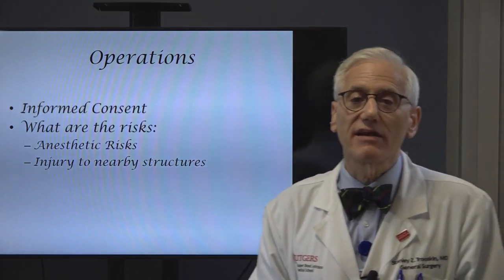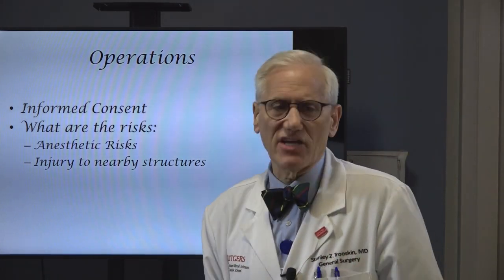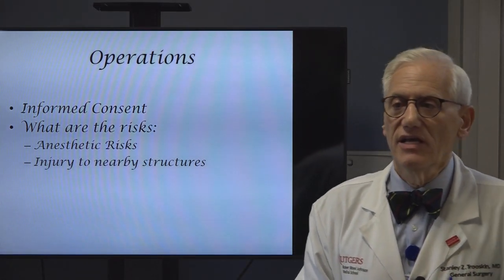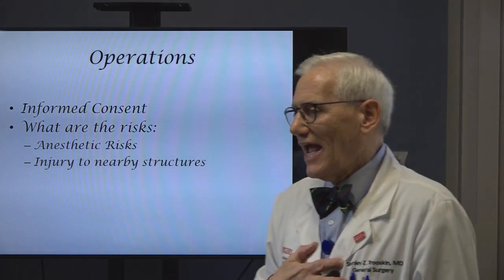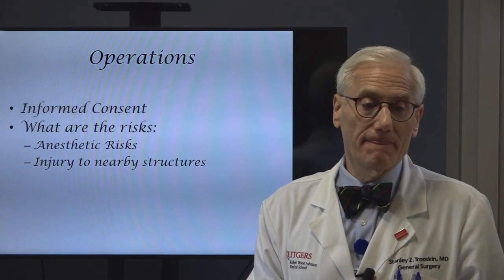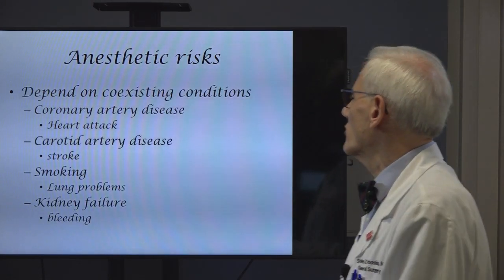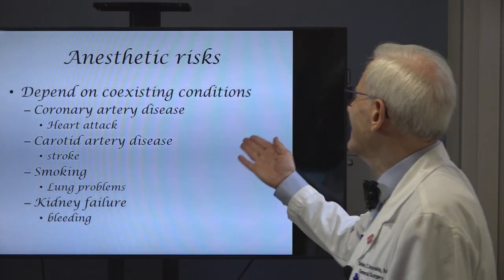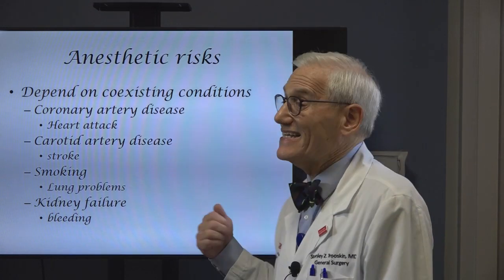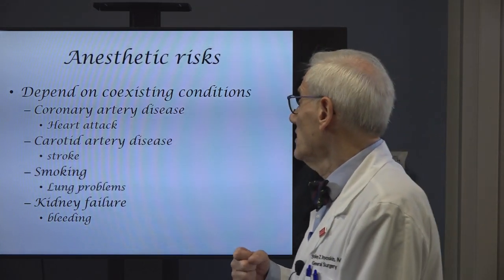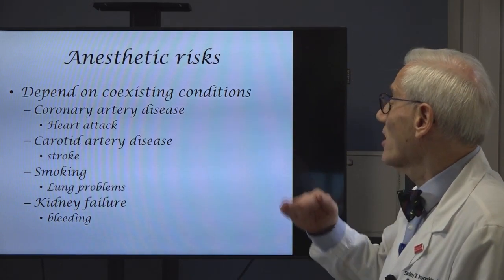We're going to talk about operations and informed consent. Informed consent is a discussion with the patient of what are the risks of the operation. There are two categories of risks. One is anesthetic risks — what's my health like and how am I going to do with the anesthetic? The other risks are what structures are nearby that have a potential to be injured. Anesthetic risks include coexisting conditions: if I have blockages in my coronary arteries, a heart attack is waiting to happen and general anesthesia could induce it. If I have disease in the arteries bringing blood to my brain, I could have a stroke if my blood pressure fluctuates a lot.